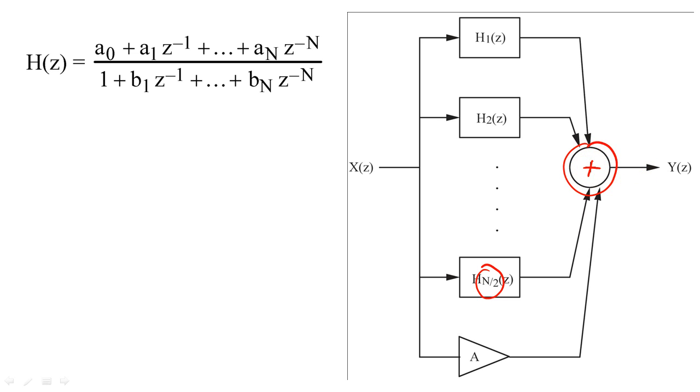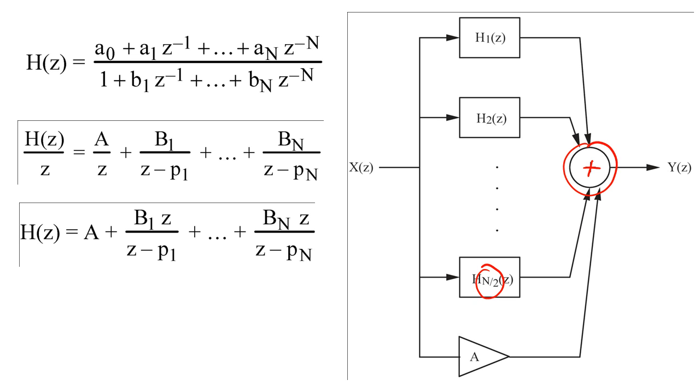Therefore, we use partial fraction expansion to rewrite our filter equation as a sum of residuals and poles. Once we have the poles and residuals in this form, we want to pair the poles and residuals for every sub-filter in such a way that all filter coefficients will be real.